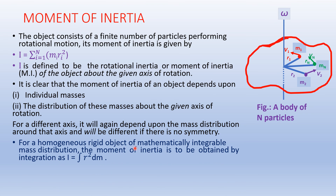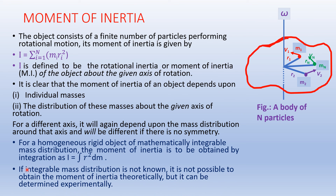For a homogeneous rigid object with a mathematically integrable mass distribution, the moment of inertia is obtained by integration as I = ∫R²·dm, where R is the perpendicular distance of the mass element from the axis of rotation. If the integrable mass distribution is not known and it is not possible to obtain the moment of inertia theoretically, it can be determined experimentally by performing various experiments.